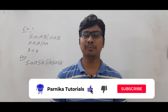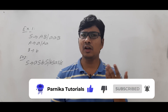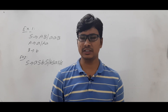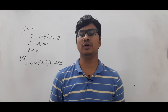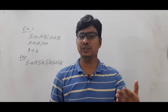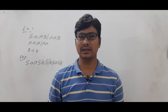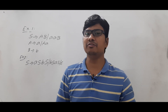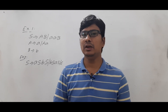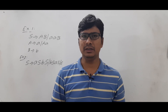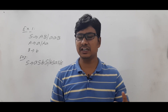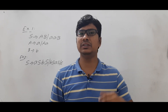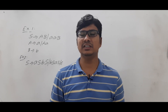Good morning friends, welcome to Parnika Tutorials YouTube channel. In the last video I defined what is an ambiguous grammar and explained that concept with an example. In this video I want to take two examples of context-free grammars and verify whether they are ambiguous or not. A grammar is ambiguous if, while generating a string, I find more than one leftmost derivation, more than one rightmost derivation, or more than one parse tree.